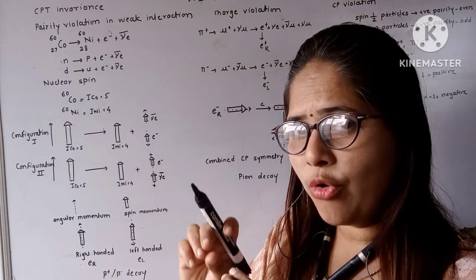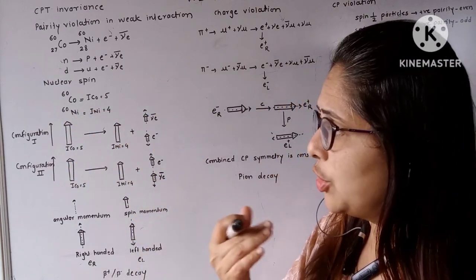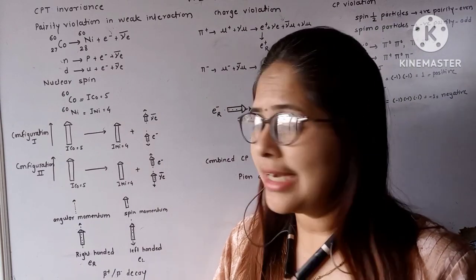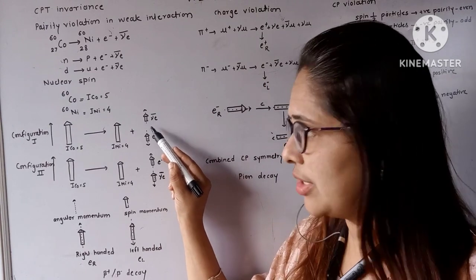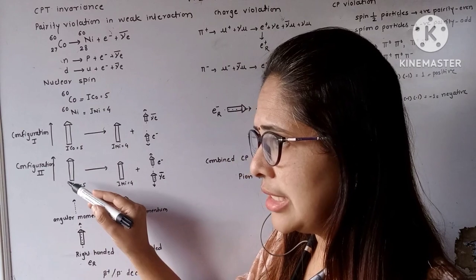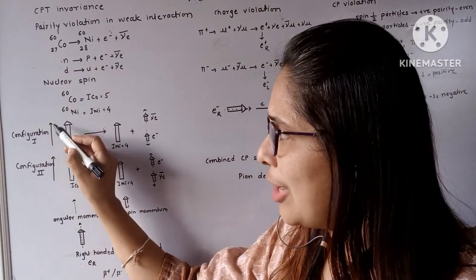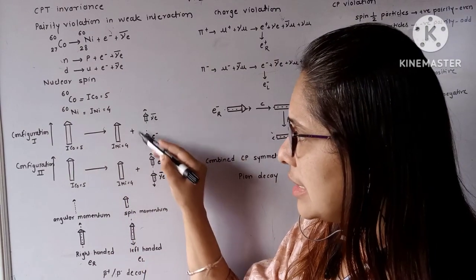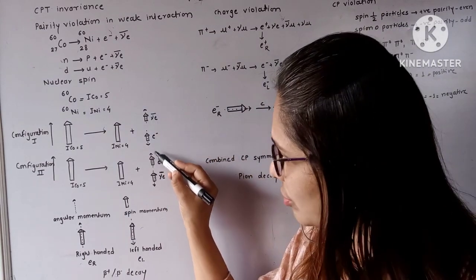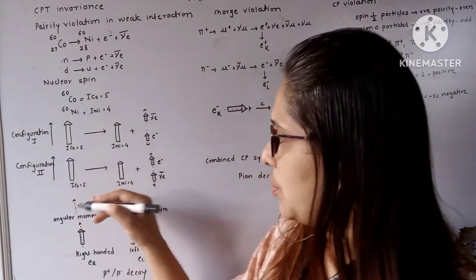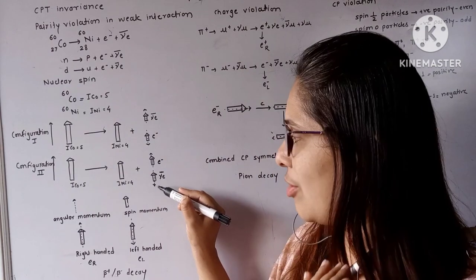Two configurations are possible for the beta-minus decay. In configuration 1, the electron neutrino is along the positive Z-axis and the electron is along the negative Z-axis. In configuration 2, the electron is along the positive Z-axis and the electron neutrino is along the negative Z-axis. We are measuring nuclear spins along the positive Z-axis.